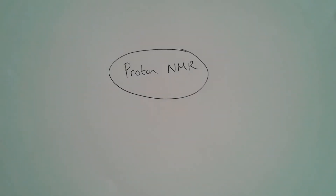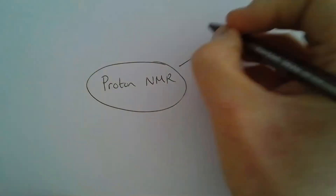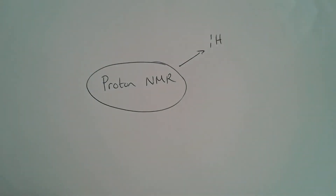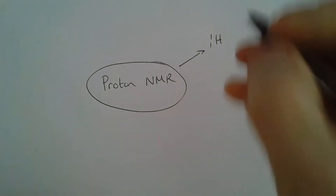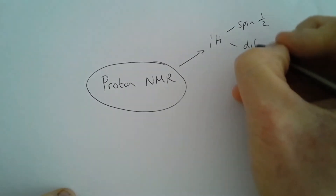We're going to have a look at proton NMR. This assumes you've looked at carbon-13 NMR first. We'll deal with some basic information, look at how we identify equivalent hydrogen environments and integrals. In future videos we'll deal with how we identify particular spectra and how we deal with coupling and chemical shift. Proton NMR involves hydrogen, which has a spin of a half, meaning like carbon-13 it gives a signal on an NMR spectrum, but in a different frequency range to carbon-13 NMR.